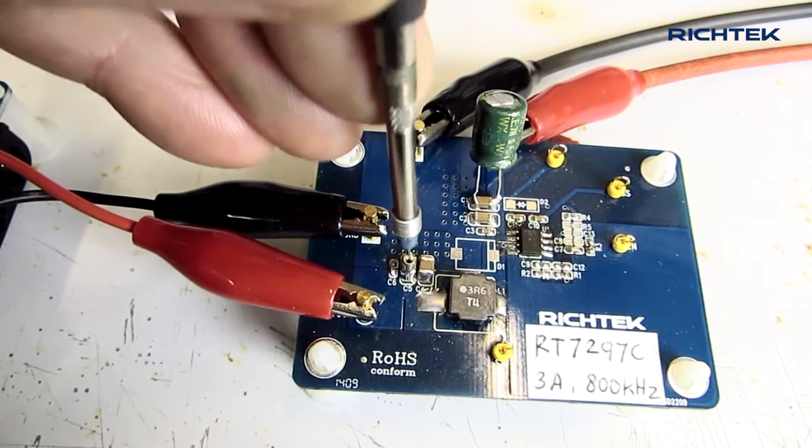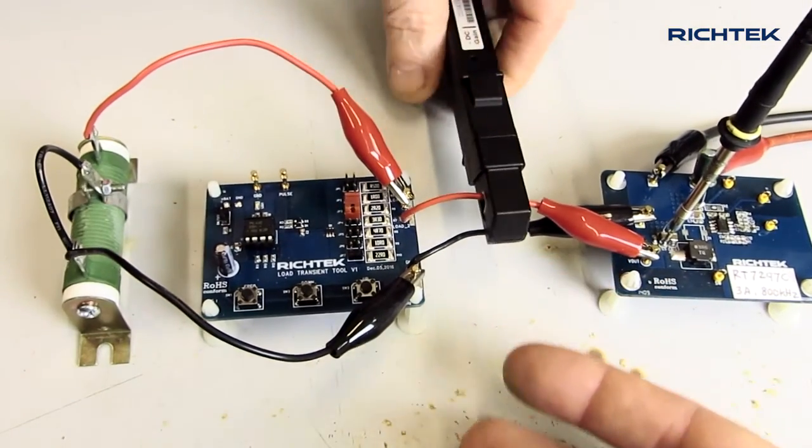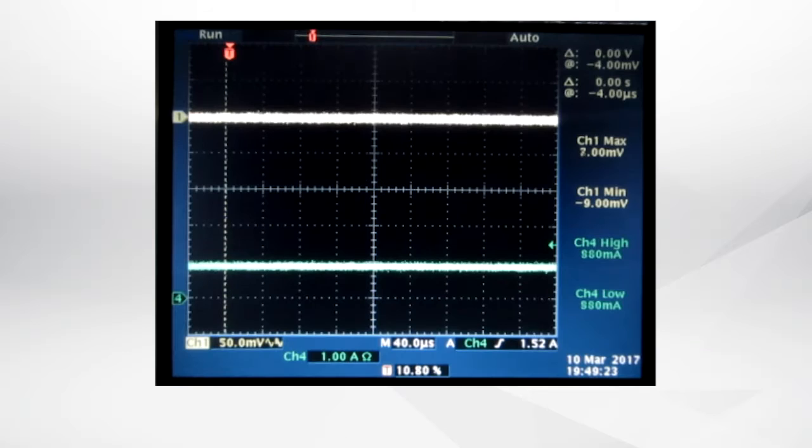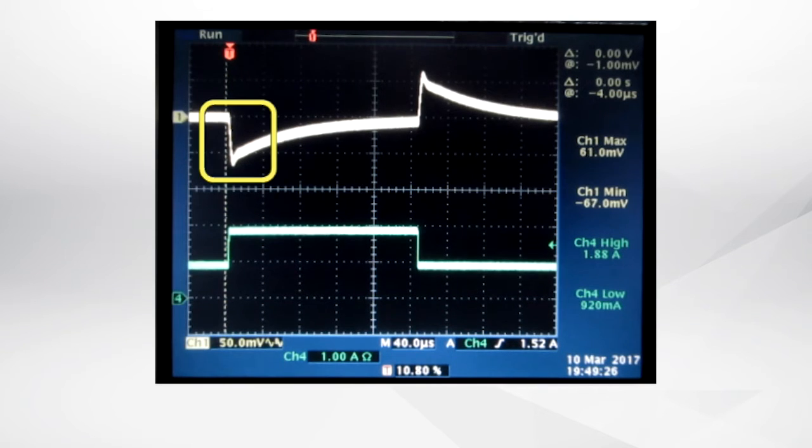Then measure the converter output voltage near the output capacitors, and measure the load current in the Load Transient Tool leads. After switching on the Load Transient Board, you can now see the converter transient response on the oscilloscope. The smooth waveform indicates good stability.